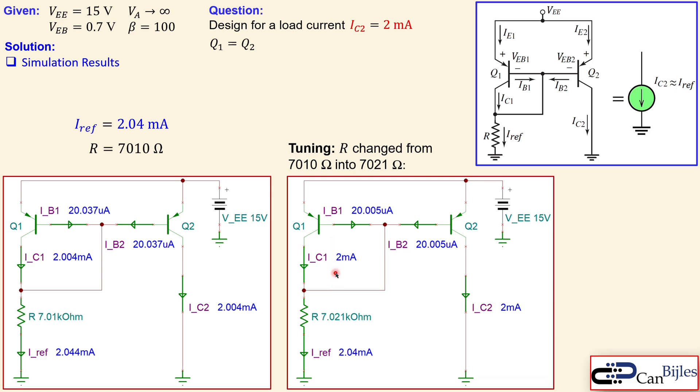You can see that. 2 milliamps here. Also here because they are exact same since they have the same VEB. And we have also 2.04 milliamps for our reference current as we have calculated. So now this circuit tuned will produce the required load current 2 milliamps.